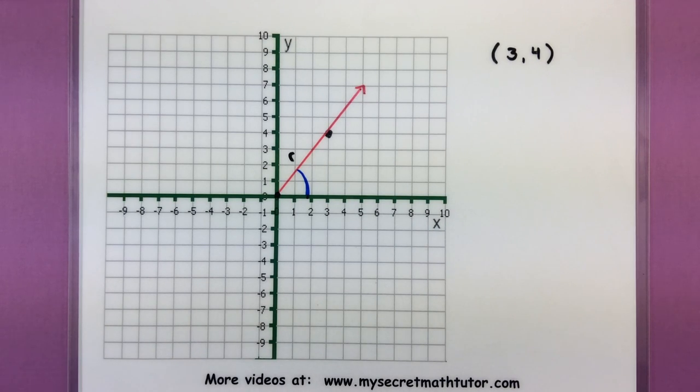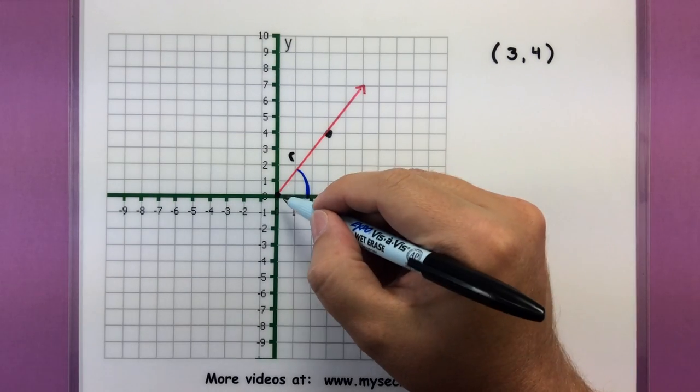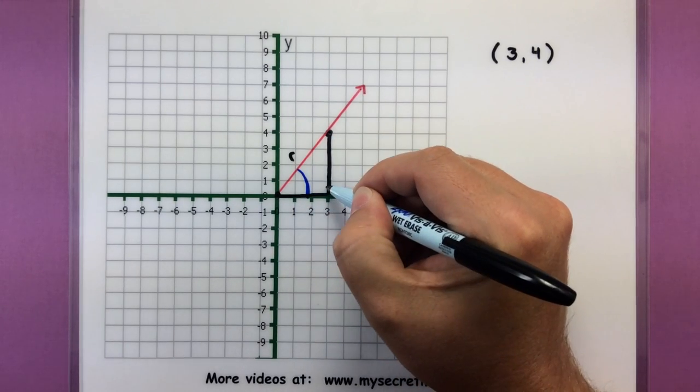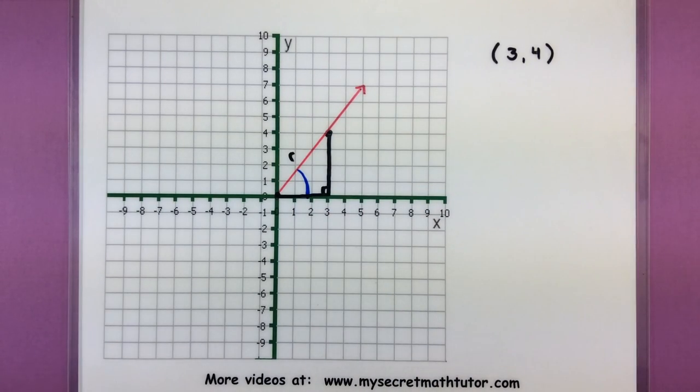To figure out something like that it all comes down to recognizing that we have a nice little triangle working in the background. And then we can use the Pythagorean theorem to figure out what the distance of r is.